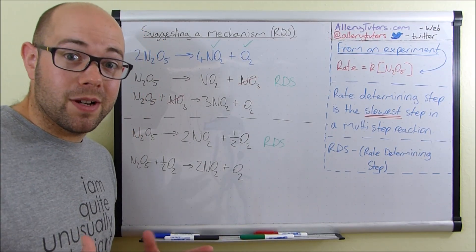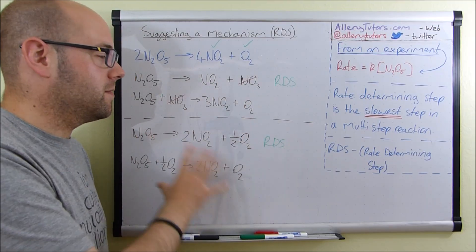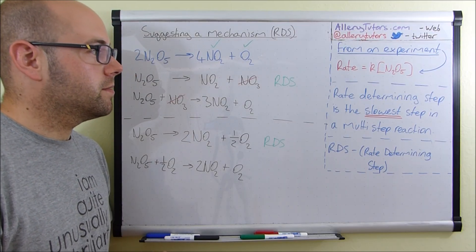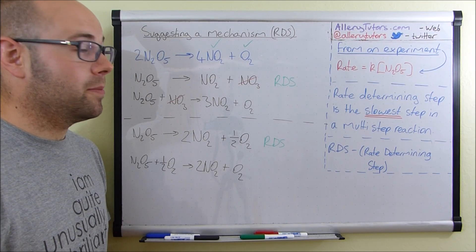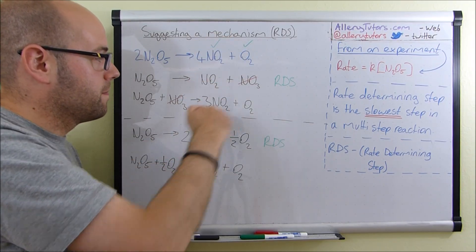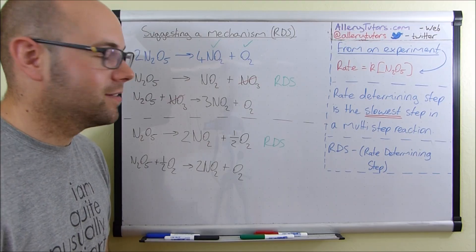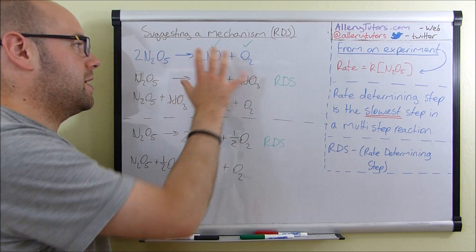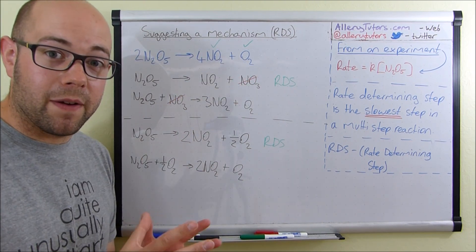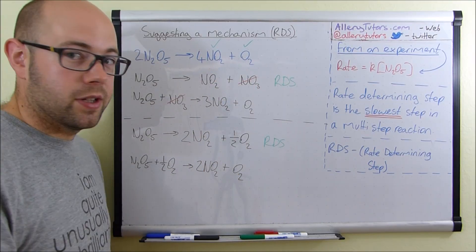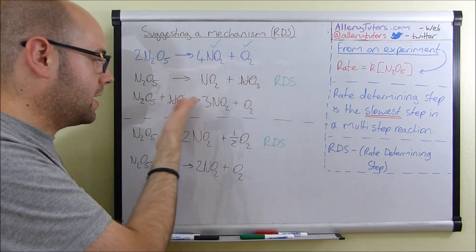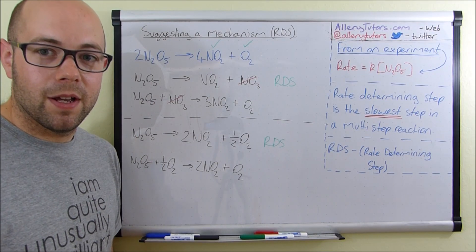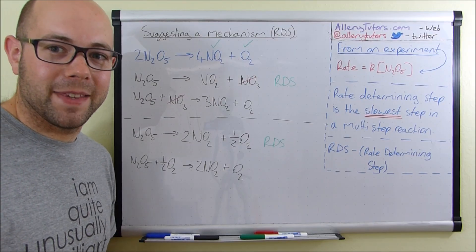So there we go — it's quite tough, but since it says 'suggesting,' there isn't a single specific answer. Make sure you're able to add everything up — it's a bit like addition in maths. Make sure they add up correctly, with the right number of species on each side. Don't be afraid to put in species that don't appear in the overall equation, as long as you use them up in a subsequent step. There are two examples of how you suggest a mechanism using the rate determining step.